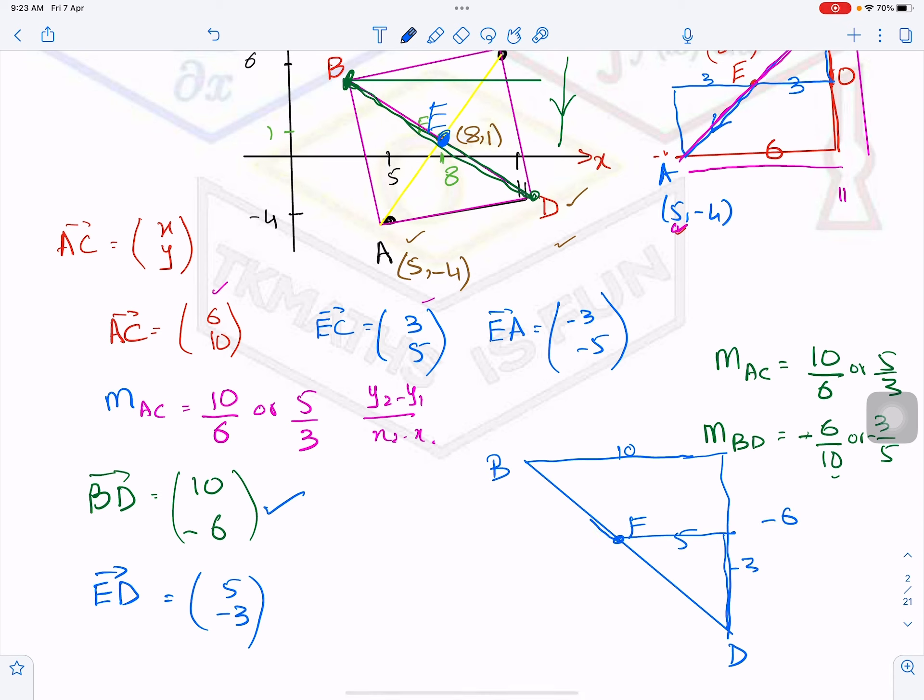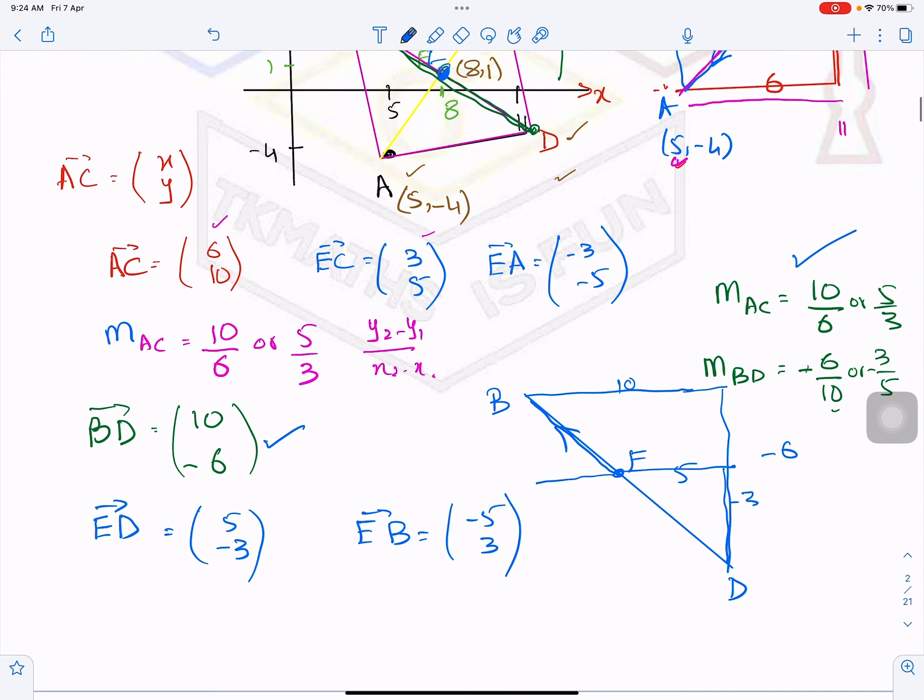So similarly your EB, which is here, will be what? You will go here, it will be (-5, 3), because now you are moving to the left and then 3 units up. So you understood with the help of this gradient how I made a vector or found out the vector here without doing any working. So thank you very much for watching this video. Please press like and subscribe button and share it with your friends. Thank you, take care.